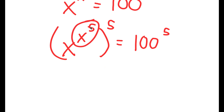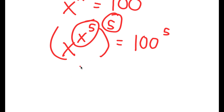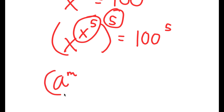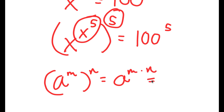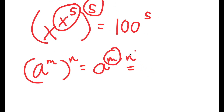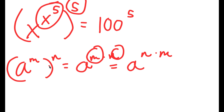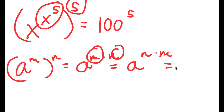Now, x to the power of 5 and 5 — these two are interchangeable. Meaning, if I have something in the form a to the power of m to the power of n, this is equal to a to the power of m times n. And a to the power of m times n, these two are interchangeable, so this is the same as a to the power of n times m, which equals a to the power of n to the power of m.